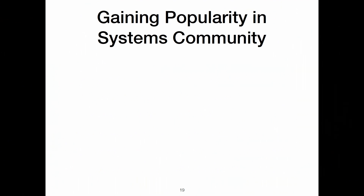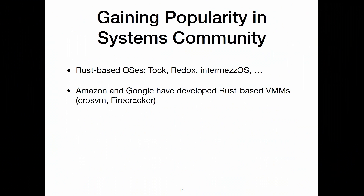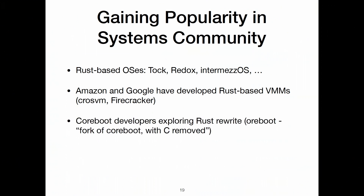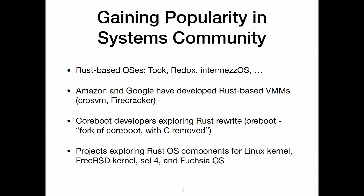Because of these advantages, Rust is gaining popularity in the systems community. You're seeing Rust-based operating systems — the Tock microcontroller OS is particularly interesting, along with Redox and Intermezzos. Amazon and Google have developed Rust-based virtual machine monitors, CrosVM and Firecracker. The CoreBoot developers are exploring a Rust rewrite called OrBoot — a fork of CoreBoot with C removed. And there are a number of projects exploring Rust OS components for the Linux kernel, the FreeBSD kernel, seL4, and Fuchsia OS. The nice thing is that Rust has good interoperability with C and C++, so you don't have to rewrite your full system.